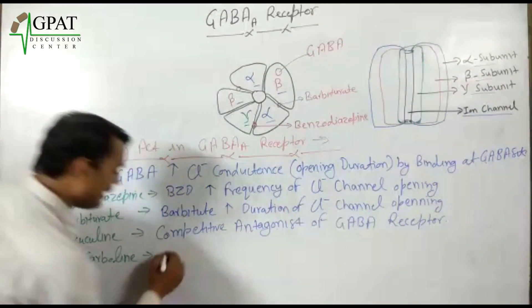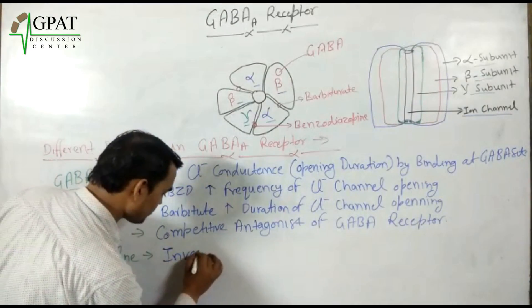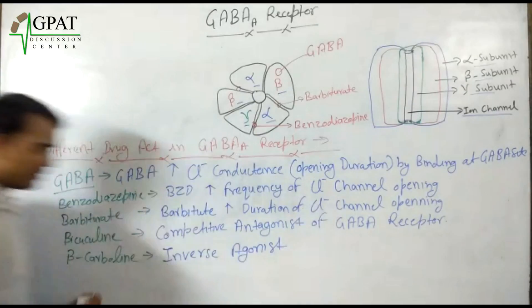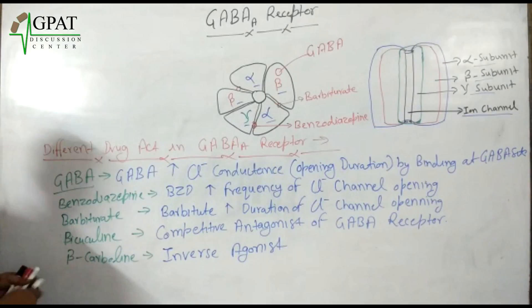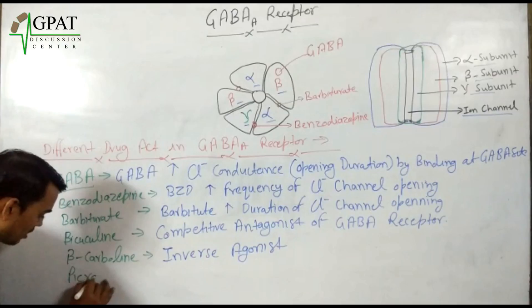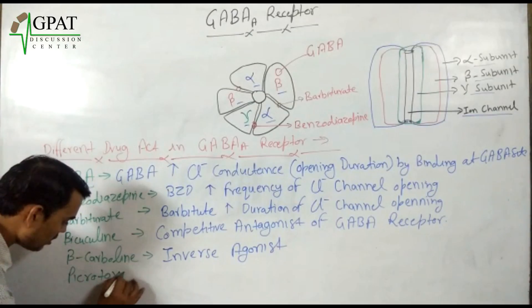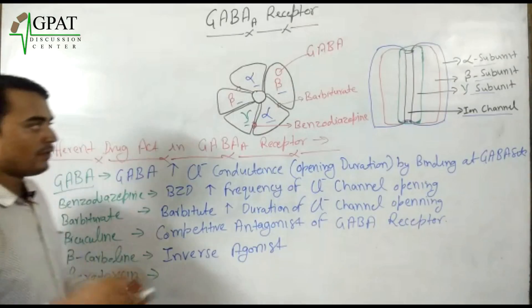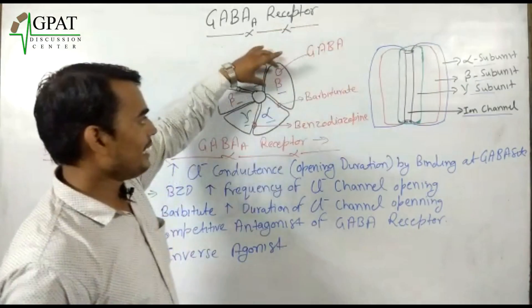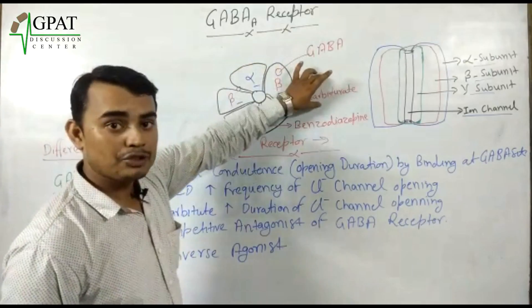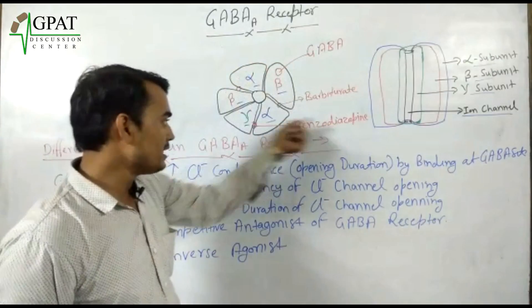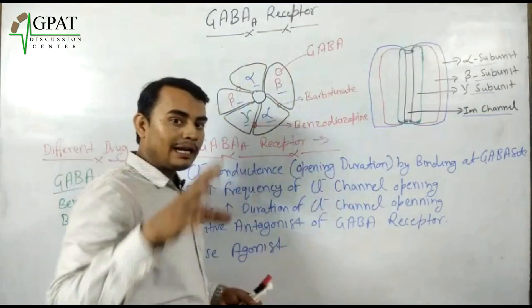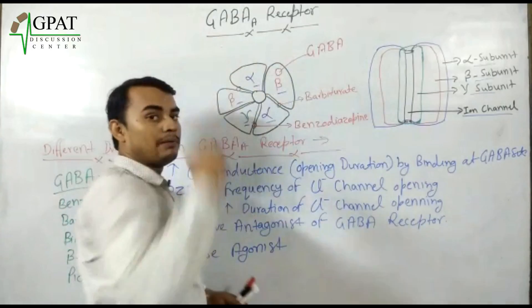Beta-carboline is an inverse agonist of the GABA receptor. Now regarding binding sites: GABA binds at the beta subunit, barbiturate binds at the alpha-beta subunit, and benzodiazepine binds at the alpha-gamma interface. These drugs can regulate the GABA receptor from the outside.